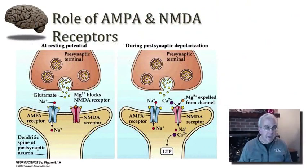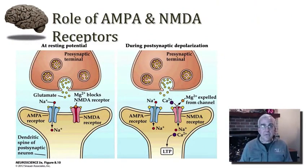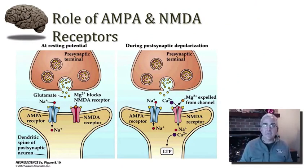Many of these mechanisms of long-term potentiation are dependent upon two important types of glutamate receptors. So now let's turn our attention to the mechanisms that support long-term potentiation, focusing on two particular glutamate receptors: one called the AMPA receptor, and the other the NMDA receptor.